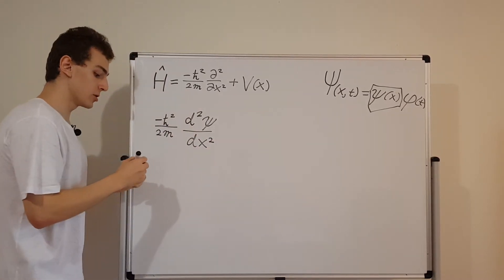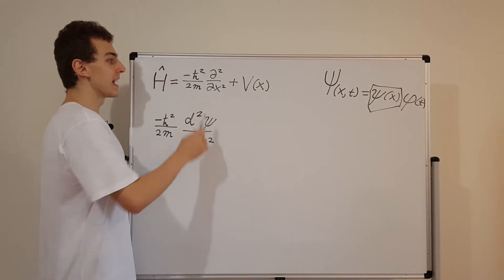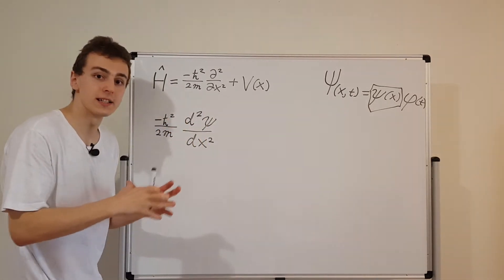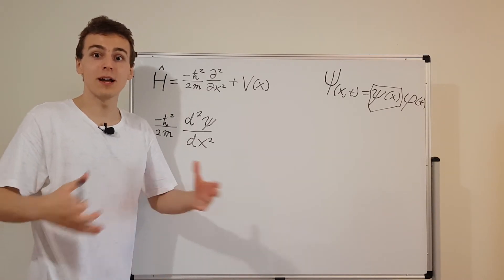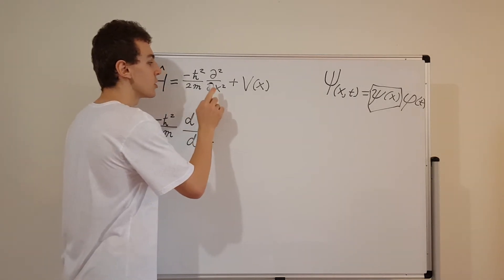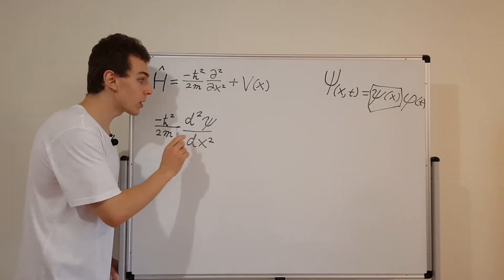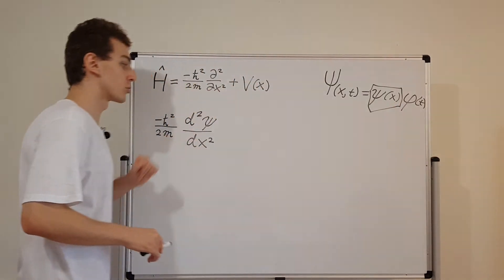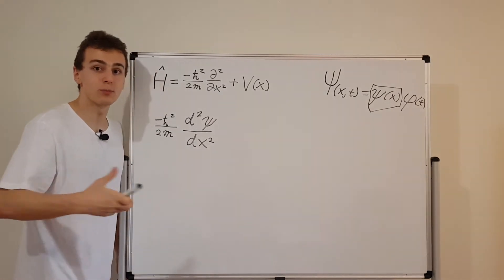Here's the thing I want you to notice: over here I'm writing a total derivative, but up here I have a partial derivative. In general, we want to keep this as a partial derivative because the thing that the operator is acting on could depend on x and t and other variables. So we want to focus just on x and differentiate with respect to x. But in this situation, lowercase psi only depends on x, so we don't have to use a partial derivative — we can use a total derivative. In fact, we used the total derivative when we used separation of variables.